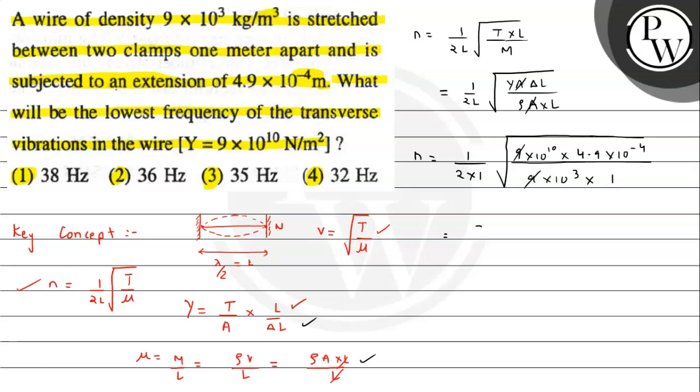Here the result will come as 1/2 × √(10¹⁰ divided by 10⁶ gives 10³, then 10³ cancels giving 10² × 49). This gives us 70/2, which comes out to be 35 hertz.